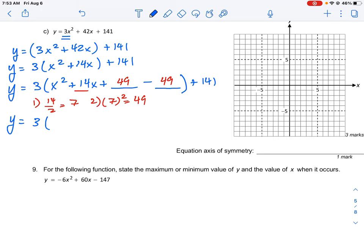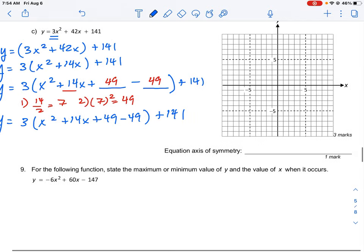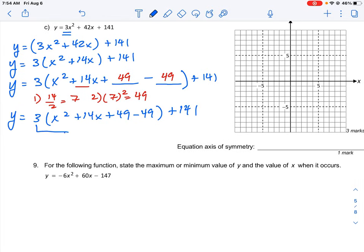So I have 3 times x squared plus 14x plus 49. Now I do also have this negative 49 here, but what you got to be careful in this case is this negative 49 is actually 3 times negative 49 because this 3 here sits on the outside. So if we're going to remove part of the bracket and bring it in, we have to account for this. So what we're going to end up doing is write the equation like this. This is going to be what I want to factor but then 3 times negative 49 is actually negative 147, then plus 141.